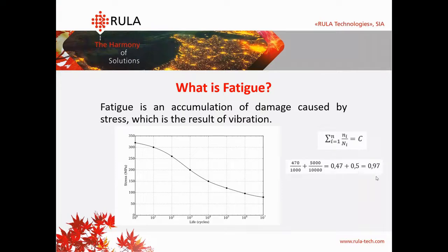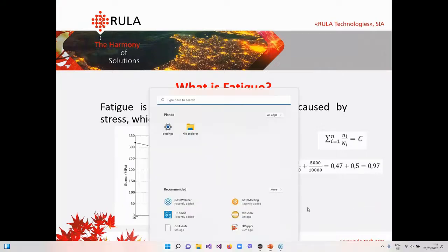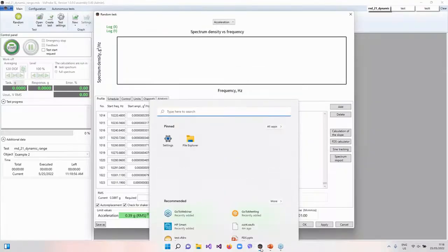In our software module we make 5,000 cycles of 1 mm stress and 417 cycles with 10 mm stress. Using the Palmgren-Miner rule we calculate our coefficient, and here you see that our object is exhausted by 97 percent.